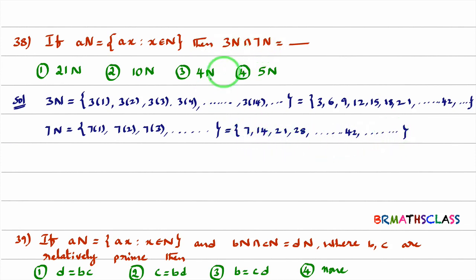Now what they are asking in the question? They are asking 3N intersection 7N. We know that intersection means the elements which are common in both 3N as well as 7N. You observe here, first common element is 21. 21 is the common element. 21 is a multiple of 3. 21 is a multiple of 7 also.